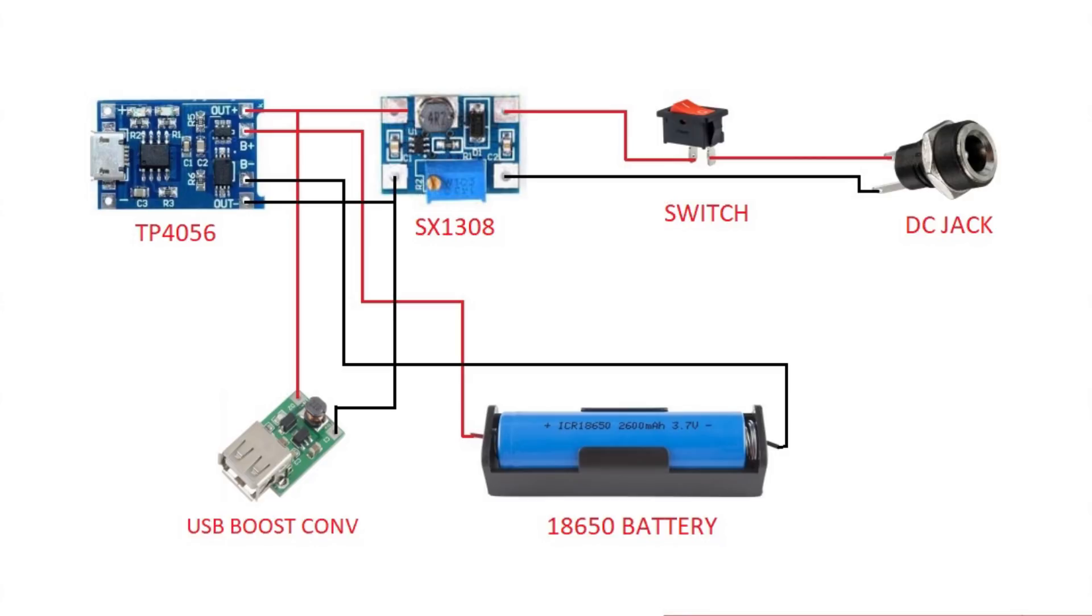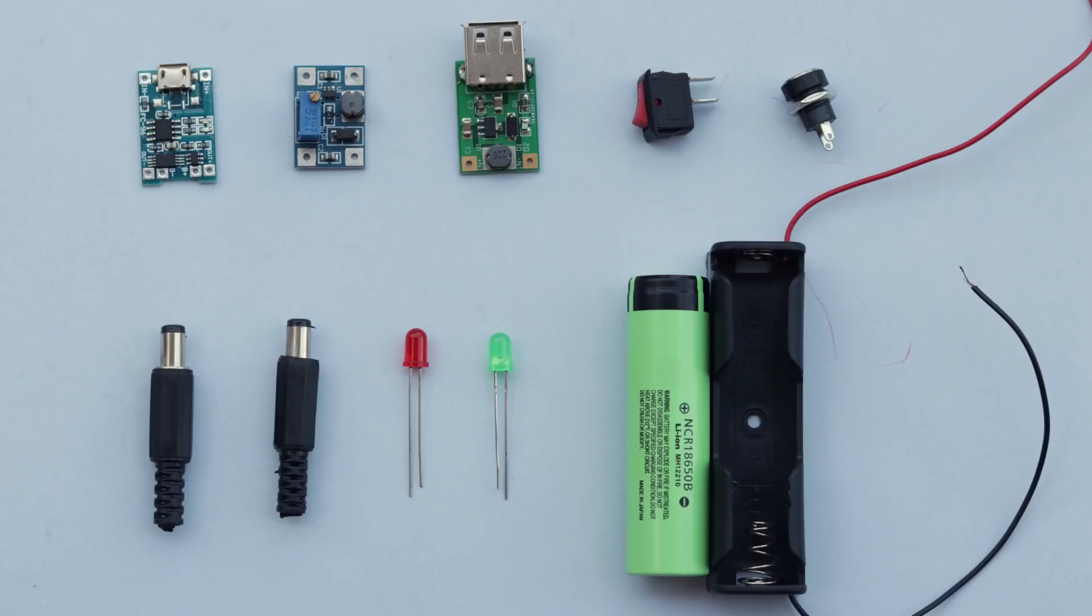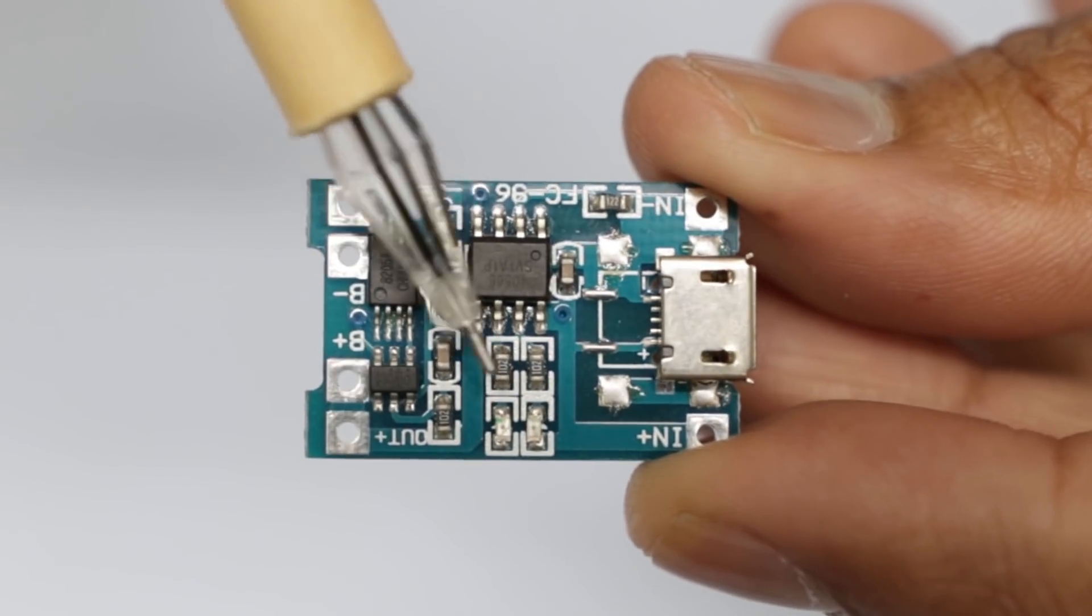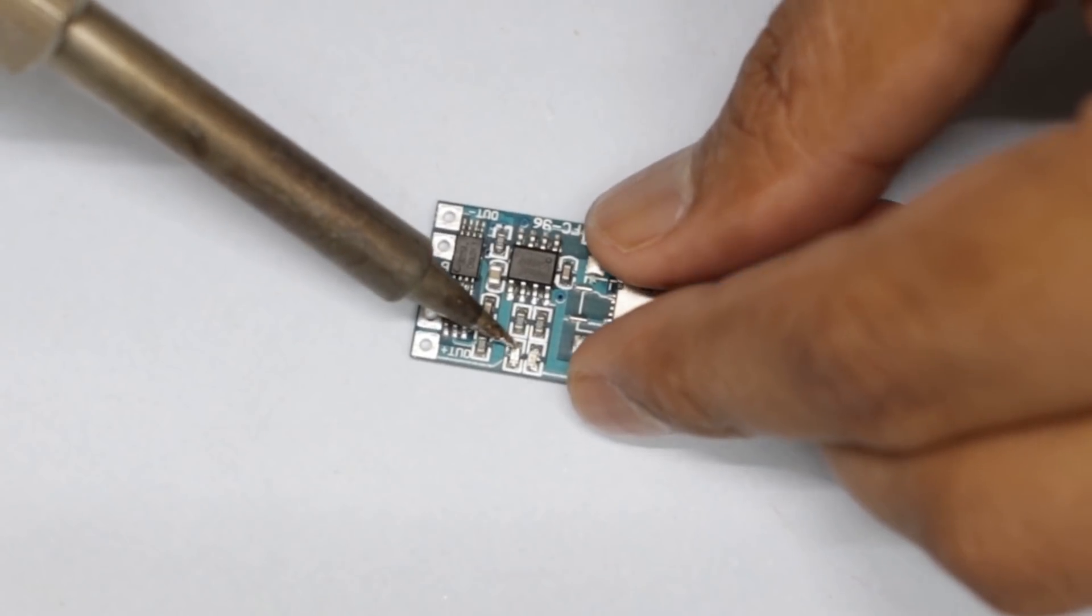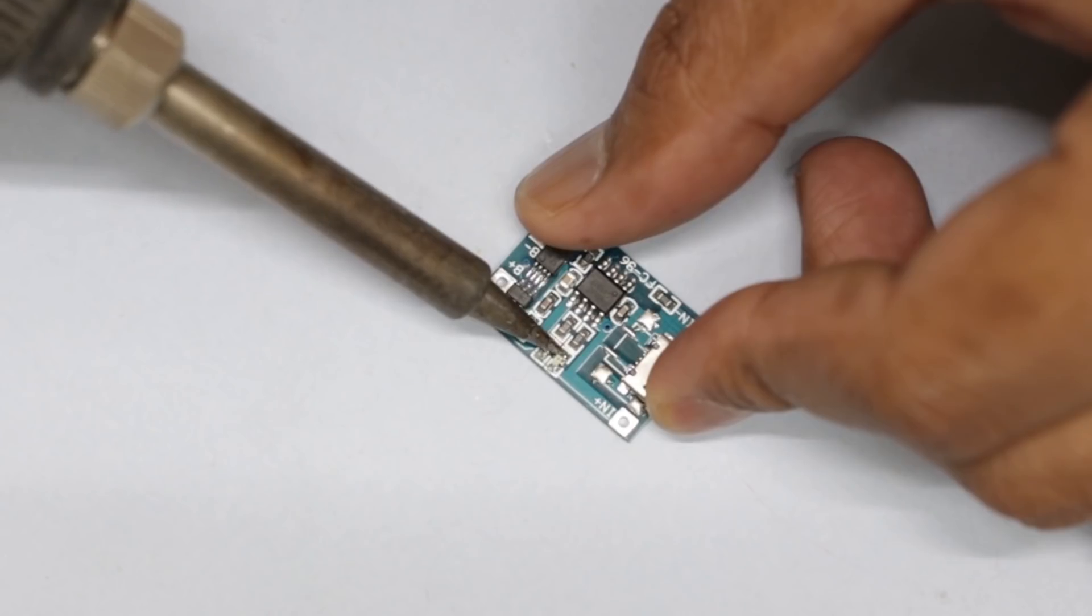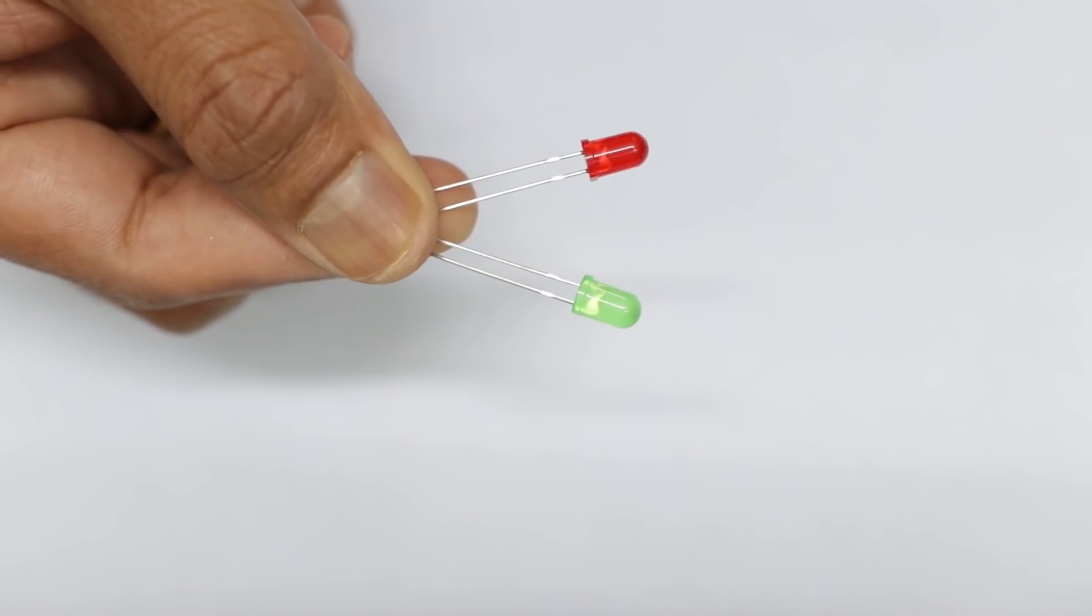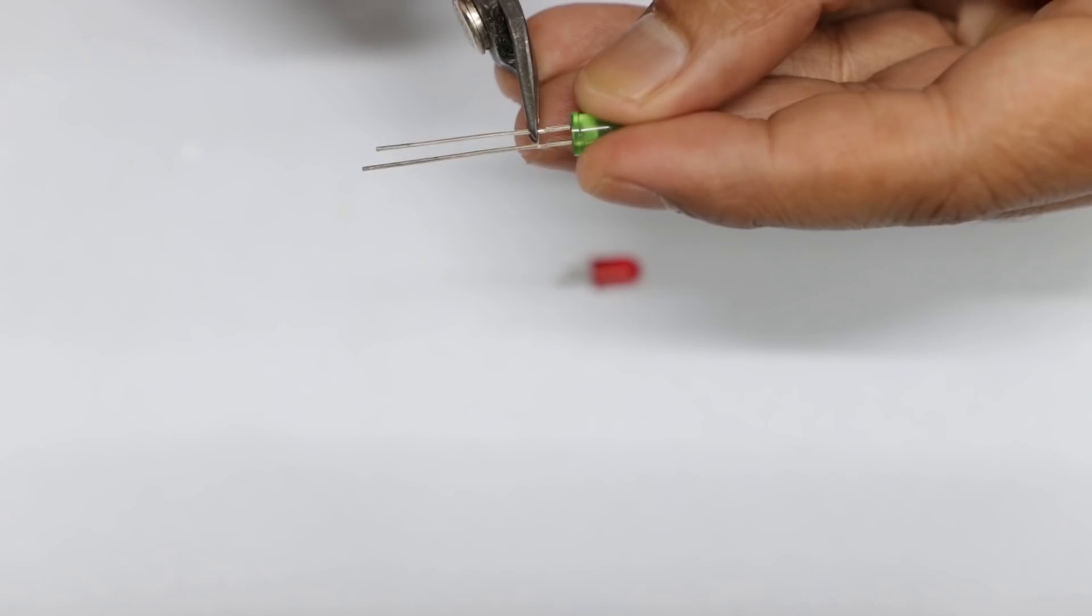Guys, without any further delay, let's move to make the project. These are the parts used for making the mini UPS. First, I remove the two status LEDs from the TP4056 module. Then I solder two 5mm LEDs for indicating the charging status.